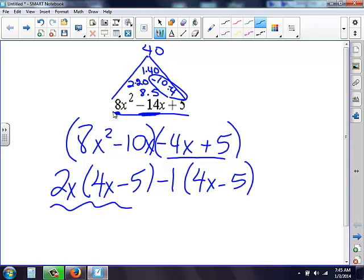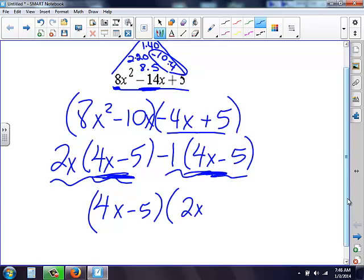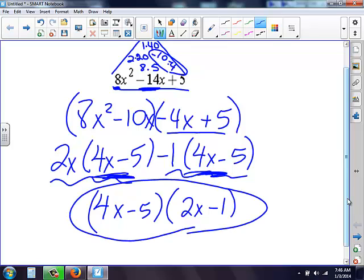That was my goal, because now I have two terms, and they both have 4x minus 5. So now I'm pulling out 4x minus 5, because they both have it. When I pull out a 4x minus 5 out of this term, I'm left with 2x. I pull out a 4x minus 5 over here, I'm left with minus 1. So there's my final answer.